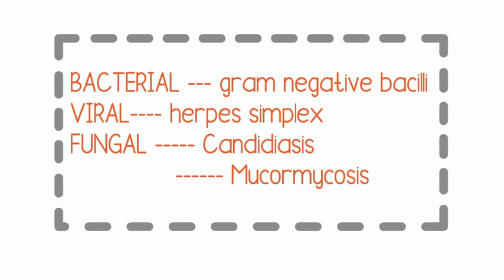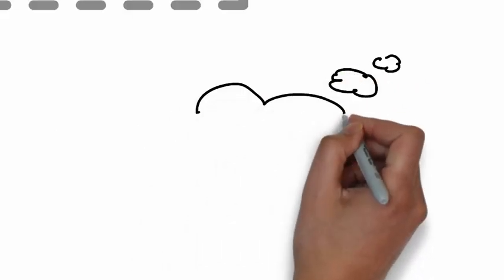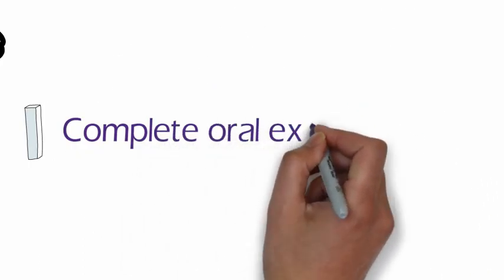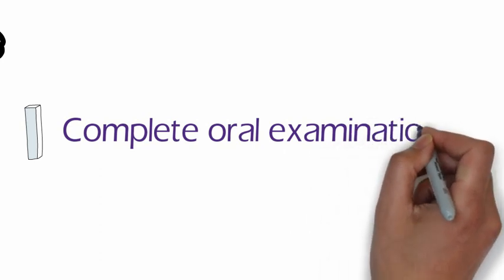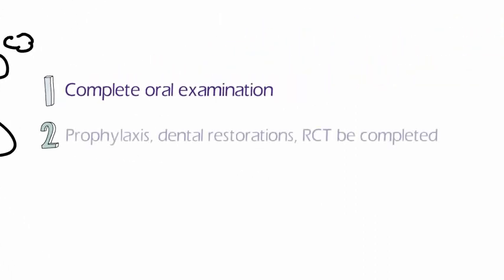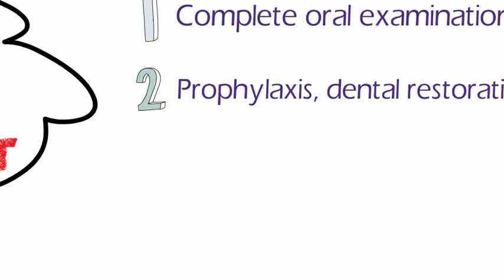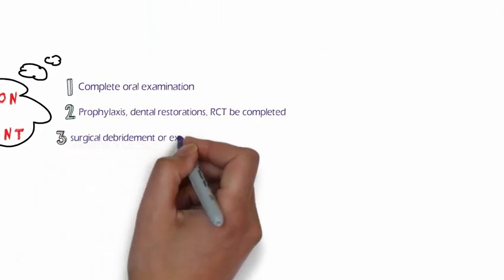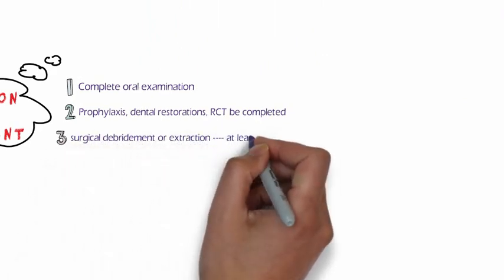As rightly said by Benjamin Franklin, an ounce of prevention is much better than a pound of cure. A complete and thorough oral examination pre-chemotherapy is important so that no oral lesion or condition goes unrecognized and unnecessarily complicates the course of cancer treatment. Scaling, root planing, dental restorations, and root canal treatments should be done beforehand.